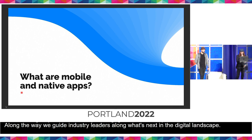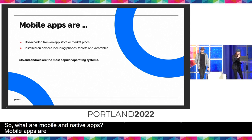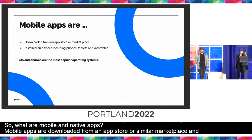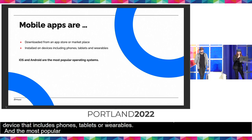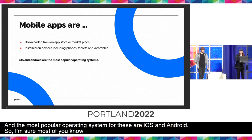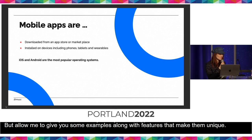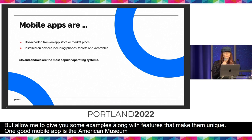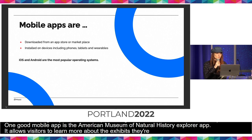So, what are mobile and native apps? Mobile apps are downloaded from an app store or similar marketplace and installed on a device — phones, tablets, or wearables. The most popular operating systems are iOS and Android. One good example is the American Museum of Natural History Explorer app, which leverages location and wireless technology to allow visitors to learn more about exhibits they're actively experiencing, as well as serving as a virtual guide throughout their tour.